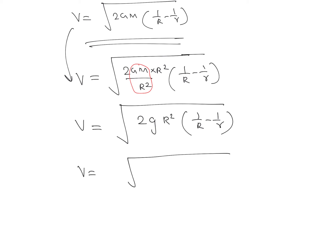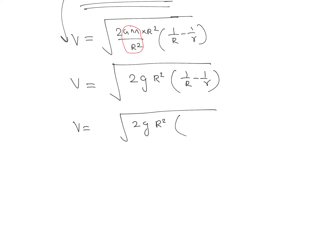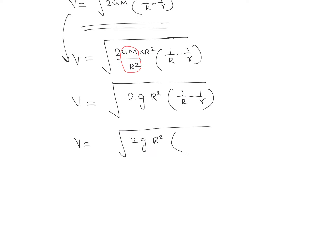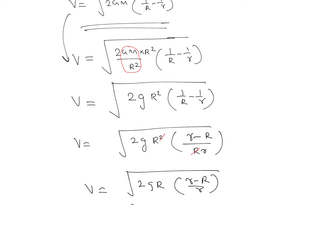We further simplify: taking R times r as the LCM for the bracket gives us r minus R divided by R times r. One factor of capital R from R squared cancels with the R in the denominator, leaving v equal to the square root of 2 times g times R times the quantity r minus R divided by r.